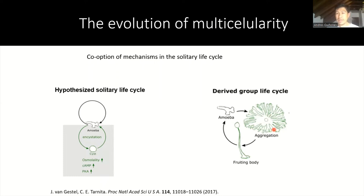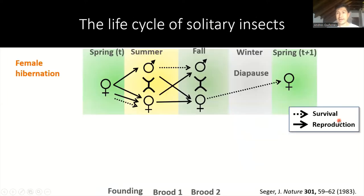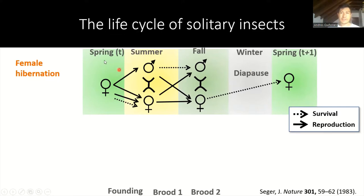Taking this perspective into account, I'd like to start talking about the life cycle of solitary insects. First, I'd like to discuss the female hibernation life cycle. In this life cycle, we start with females that were mated from the season before. These females produce one first brood in the summer and another brood in the fall.